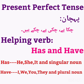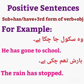Helping verb: has, have. 'Has' we use with he, she, it, and singular noun. 'Have' is used with I, we, you, they, and plural noun. Let's look into the positive sentences. The formation of positive sentences is: subject plus has/have plus third form of verb plus object. For example: 'He has gone to school.' 'The rain has stopped.'